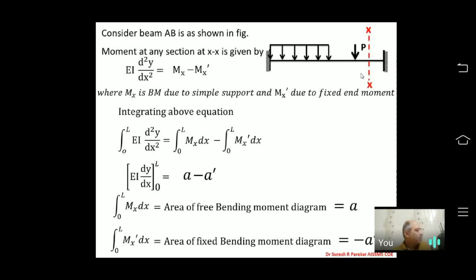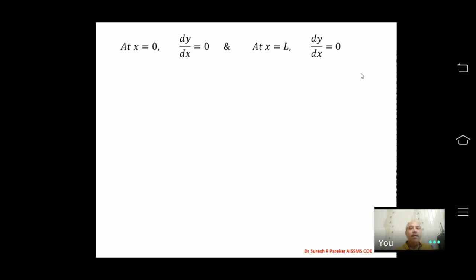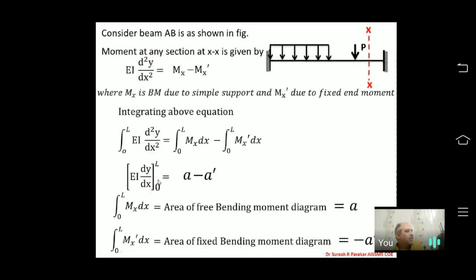So we have the expression 0 = A − A'. Applying boundary conditions: at x = 0, dy/dx = 0, and at x = L, dy/dx = 0. Substituting these into the equation, the left-hand side becomes 0, giving us our first equation: 0 = A − A'.